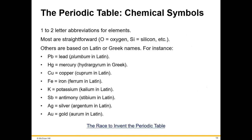The symbols on the periodic table are not required memorization for Chemistry and Society — Chem 1115. I'll give you a periodic table and you just need to be able to look at it and write the symbol correctly. It's always got the first letter capitalized and the second letter is not capitalized. So if it's one letter, it's just a capital. If you wrote a lowercase 'o', that would not be correct, and likewise if you wrote uppercase S and uppercase I for silicon, that would be incorrect as well.